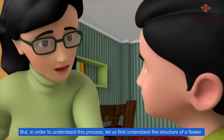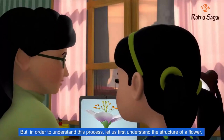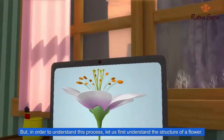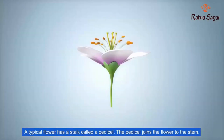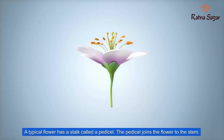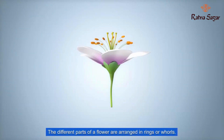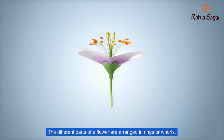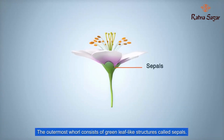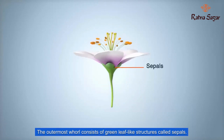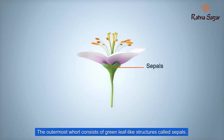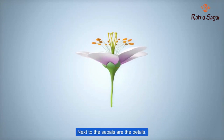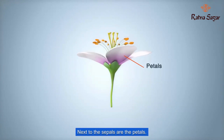But in order to understand this process, let us first understand the structure of a flower. A typical flower has a stalk called a pedicel. The pedicel joins the flower to the stem. The different parts of a flower are arranged in rings or whorls. The outermost whorl consists of green leaf-like structures called sepals. Next to the sepals are the petals.